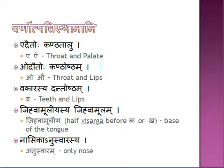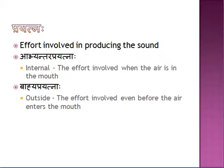So sthana is one factor which differentiates the letters. The other factor is called prayatna — the effort involved in pronouncing the letters. This prayatna is of two kinds: abhyantara prayatna (internal, within the mouth) and bahya prayatna (external, before the air enters the mouth, i.e., at the vocal cords).